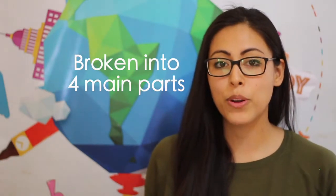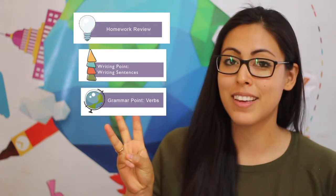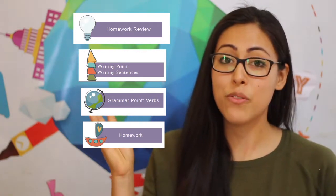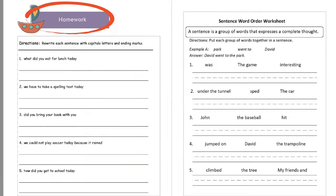That brings us to material number two: Write Source. As the title suggests, the purpose of this material is to help the student write — anywhere from essays, short paragraphs, and short stories. These class materials can be anywhere from 11 to 16 slides and can be broken up into four main parts: one, the homework review; two, writing point; three, grammar point; and four, the homework assignment. These four parts appear in every series from G1 to G4 and above.